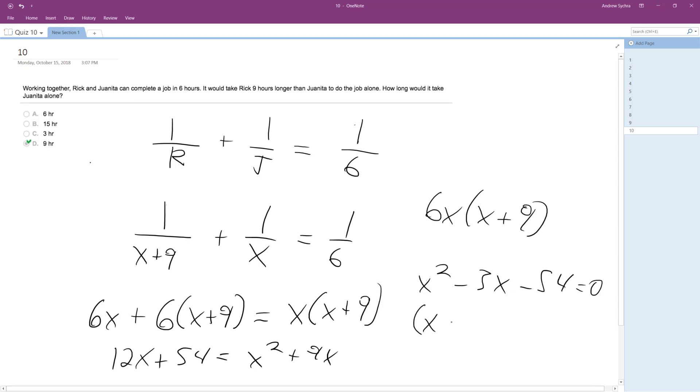Out of this, we get (X minus 9)(X plus 6). X can equal negative six or nine.